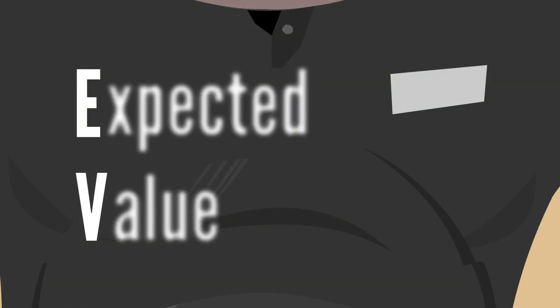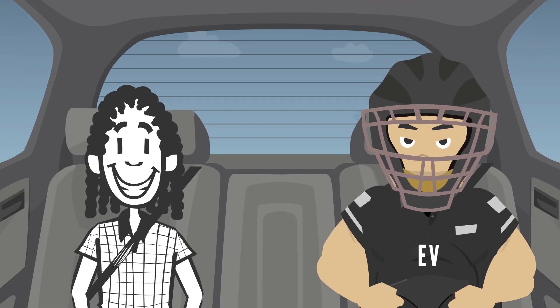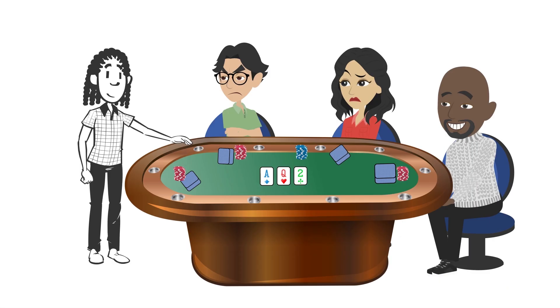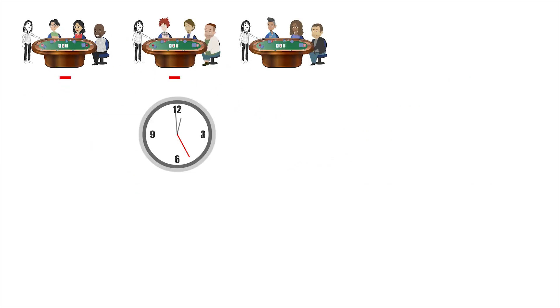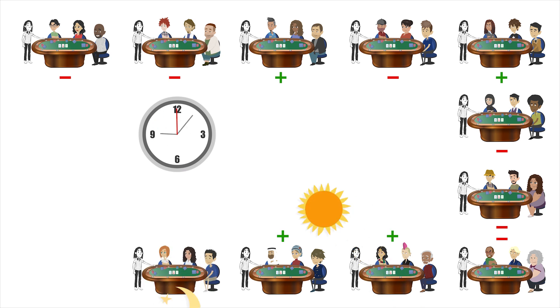Expected value, or EV for short, is the driving force behind all poker decisions. It tells us how much we expect to gain or lose in the long term with every decision we make. What makes EV difficult to understand and apply is that we must overlook the results of each individual hand.